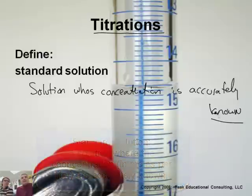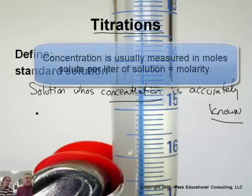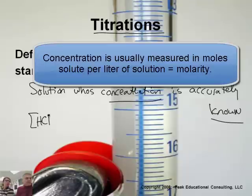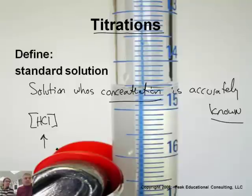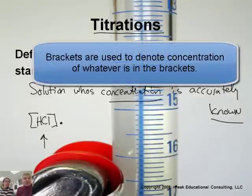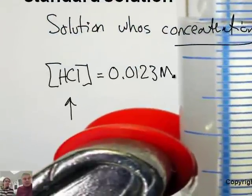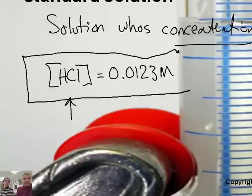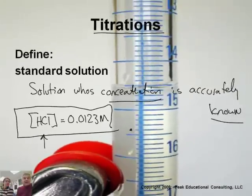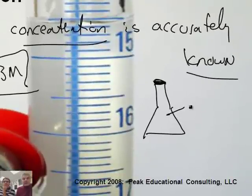So it's a very accurately known concentration. Concentration is how much stuff is dissolved — we usually measure that as molarity, which would be moles per liter. For example, if I have hydrochloric acid — I put this in brackets because that means concentration — and I happen to know its concentration to be 0.0123 molar, known very accurately to three significant figures, that would be a standard solution. I would have that in a labeled container: 0.0123 molar HCl. Caution — acid — dangerous.